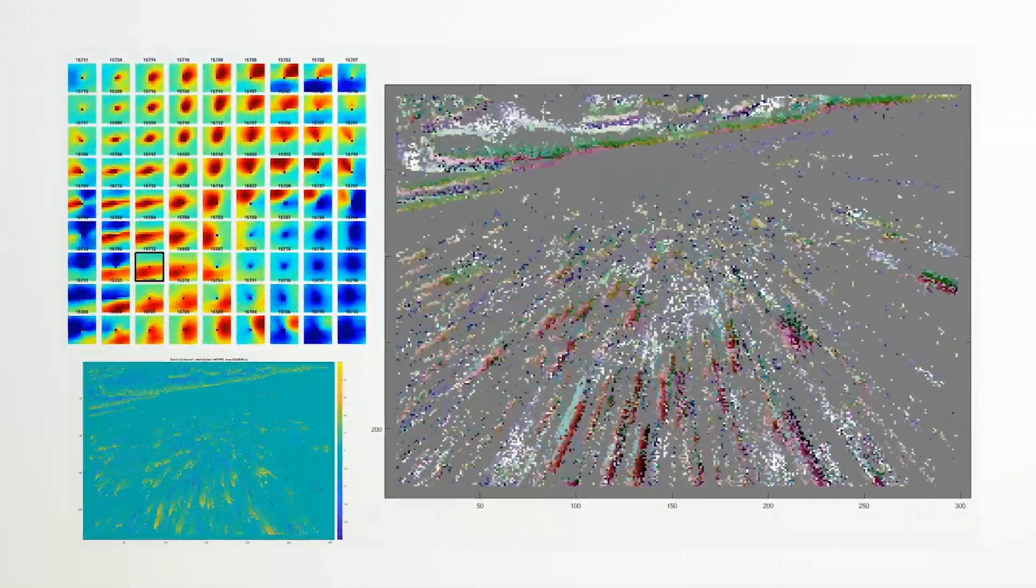Specifically, we've been working with what we call silicon retinas. Instead of taking a picture like a conventional camera, these cameras only send changes. Each pixel only sends a change in light intensity falling on it.